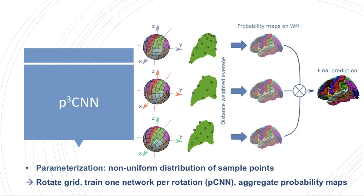As mentioned before, a deformation-free mapping between sphere and 2D grid does not exist. So using a parameterization approach will always result in a non-uniform distribution of sample points, and this can in turn affect regional segmentation quality. For example, cortical regions that map to the equator are less densely represented than those at the poles, where we have many more sample points for the region of interest.